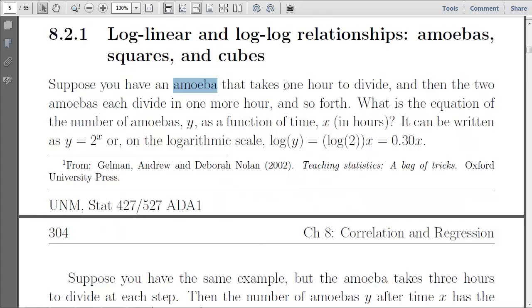And so after one hour, so at time zero, you have one amoeba. After one hour, you will have two amoebas. And then, each of those will divide in one hour more. And so after two hours, you'll have four amoebas, and so on. So what equation can we write for the number of amoebas y as a function of time x? So the natural equation here is to have the number of amoebas y equal two to the power x. Because every hour x, the number of amoebas doubles. And so that's the power relationship here.